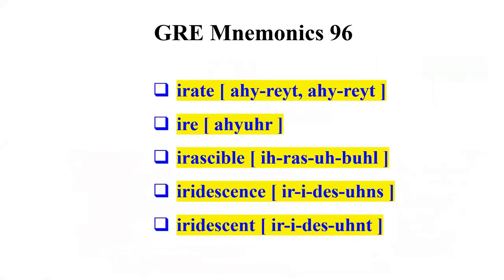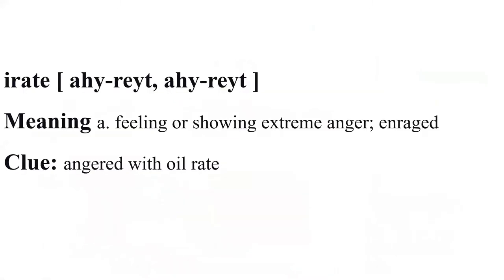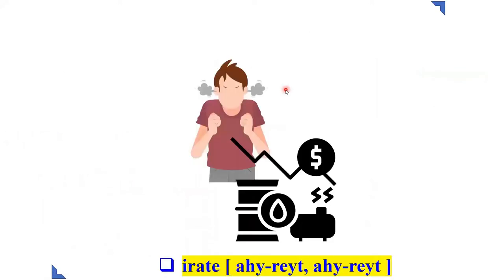Let's learn and understand today's set of GRE words. Irate – Feeling or showing extreme anger, enraged. Clue – Angered with oil rate. Visualize – The low rates of oil made the oil trader angry.